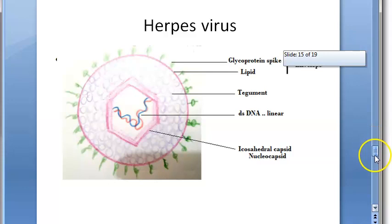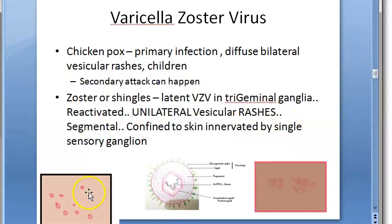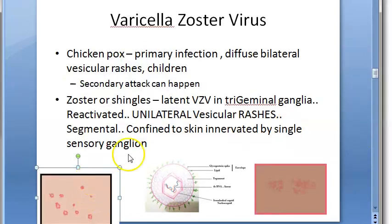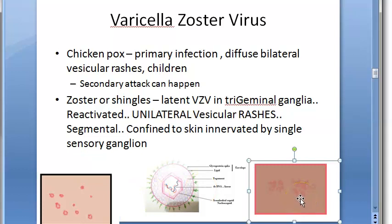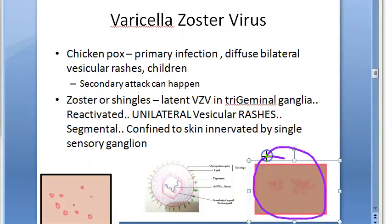You have already seen the differences between chickenpox and zoster. Chickenpox is the primary infection with varicella zoster virus — that is a bilateral diffuse vesicular rash, usually attacking children. This virus then goes and sits in the trigeminal ganglion and may become latent. When there is a reactivation of this latency from the trigeminal ganglion, it causes zoster or shingles, which is unilateral.